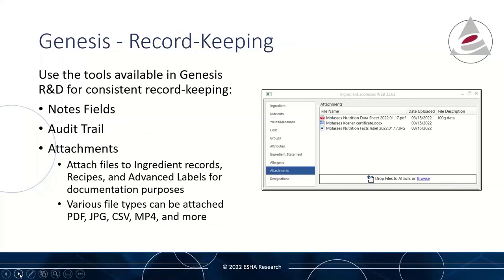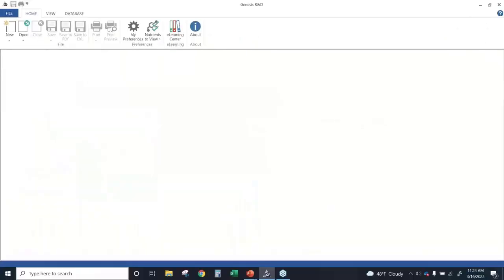To help with maintaining your documentation, Genesis includes several tools and fields to capture information. Genesis includes notes fields on ingredient and recipe records, an audit trail feature, and an attachments feature. With the attachments function, you can attach documents directly to your ingredient and recipe files in Genesis to help keep that information gathered and traceable. At this time, I'm going to move over into Genesis and take a look at where some of these features and fields can be found.